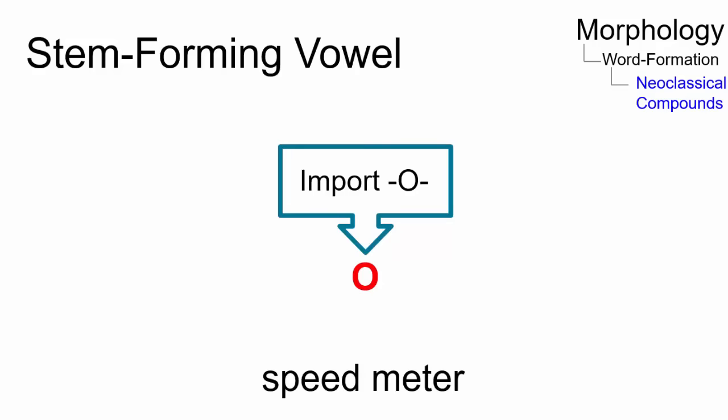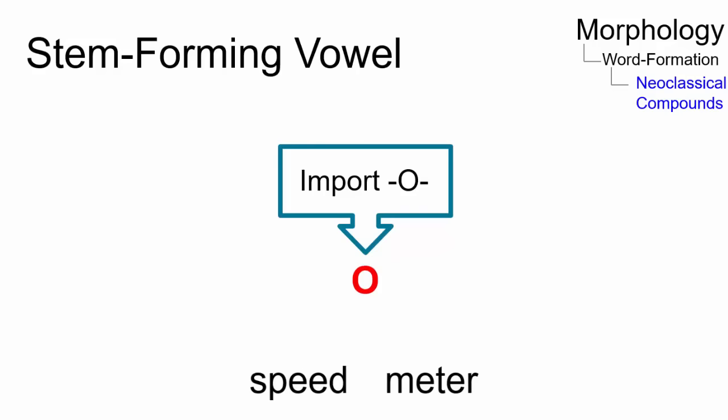Since English has no native thematic vowels, it imports elements like o, which hold bases together, like in speedometer.